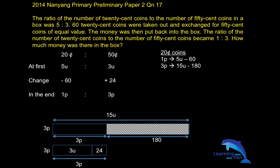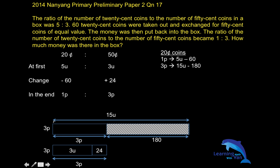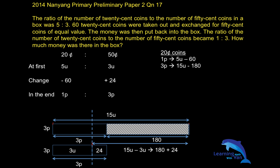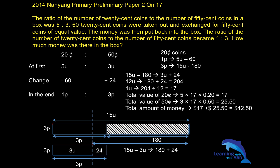Can you see? From point to point here is 15u, and from point to point on the other side is 3u. What does it mean? 15u minus 3u gives 12u, which is equivalent to 24 plus 180. So it is as good as saying 15u minus 3u equals 180 plus 24.